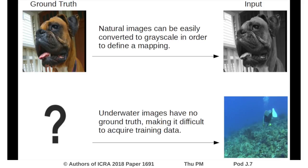Unlike many image-to-image translation problems, particularly that of colorizing black and white photos, the underwater domain lacks a form of ground truth. For example, an image of a dog can easily be converted to grayscale in order to form a training pair, whereas an underwater image does not contain a corresponding ground truth image.